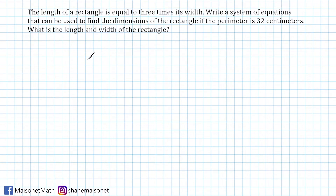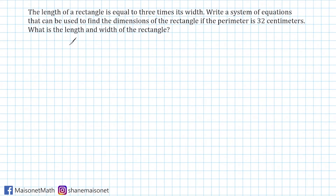With systems of equations dealing with word problems, sometimes it is difficult to figure out where to start. What I like to do is to determine what two variables we're going to use in order to solve. To figure out what variables we are going to use, we should figure out what it is we are trying to find. We know that we are dealing with the length and the width of a rectangle, so the two variables are going to be L for length and W for width.